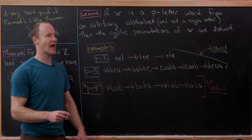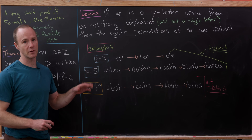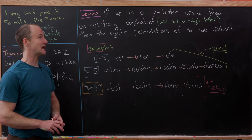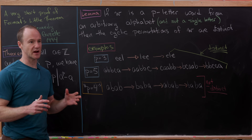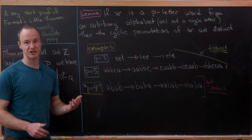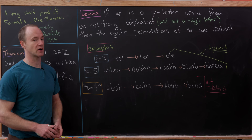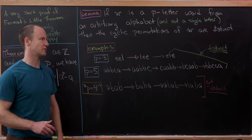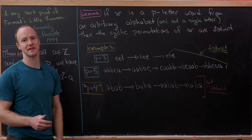What's doing a lot of the heavy lifting here is the following lemma. Let's look at this lemma and see what's going on before we prove it. So let's say that w is a p-letter word from an arbitrary alphabet — just a string of characters. We'll also assume that w is not just a single letter repeated p times. Then the cyclic permutations of w are distinct. Let's see that in action so we see that primeness is really telling us they are distinct.